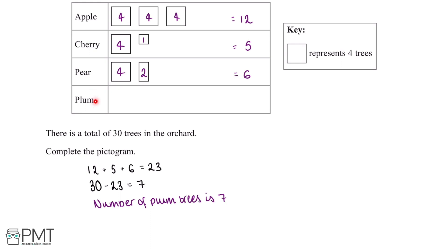Now we can start filling this into the pictogram. If one larger square represents four trees and seven is greater than four, we can add one of the larger squares into the plum row. This represents four trees, and since we want to represent seven trees in total, we have three remaining trees to represent. A shape which is three quarters of the size of the larger square will represent three, so we draw that in. This now represents seven plum trees.